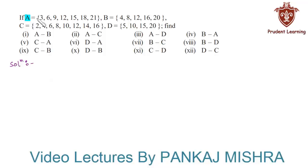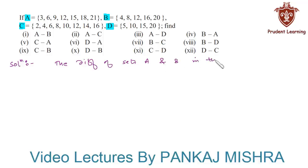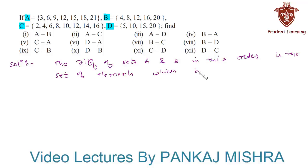In this question we have four sets A, B, C and D, and we are required to find the value of the following differences. Before solving the question, let us recall the concept of difference of sets. The difference of sets A and B, in this order, is the set of elements which belongs to A but not to B. So when we say A minus B, we simply mean the set of all elements that are in A but not in B.